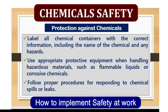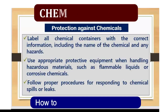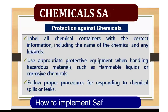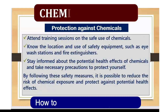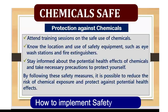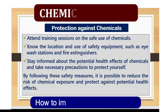Number 12: label all chemical containers with the correct information, including the name of the chemical and any hazards. Number 13: use appropriate protective equipment when handling hazardous materials such as flammable liquids or corrosive chemicals. Number 14: follow proper procedures for responding to chemical spills or leaks. Number 15: attend training sessions on the safe use of chemicals. Number 16: know the location and use of safety equipment such as eyewash stations and fire extinguishers. Number 17: stay informed about the potential health effects of chemicals and take necessary precautions to protect yourself.